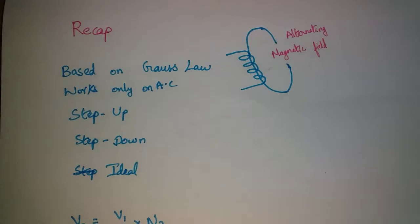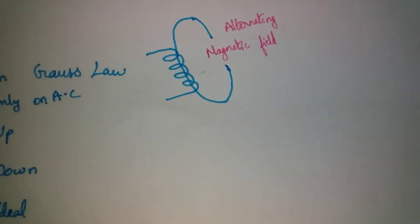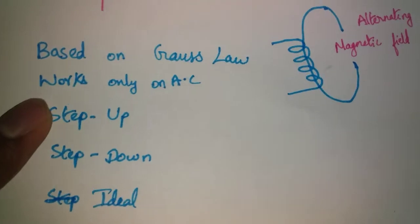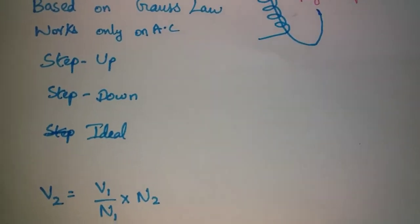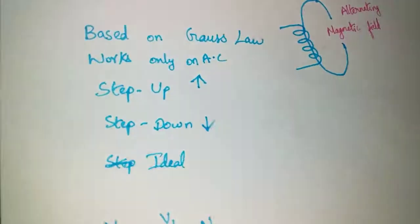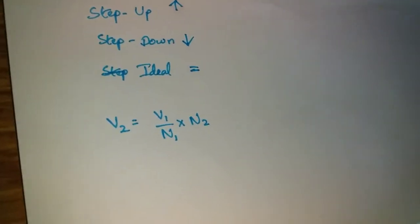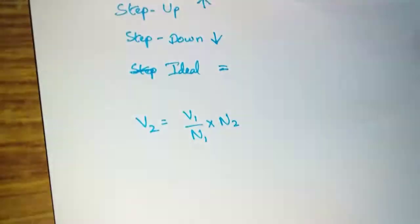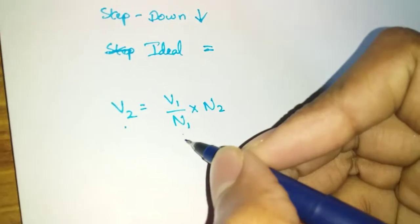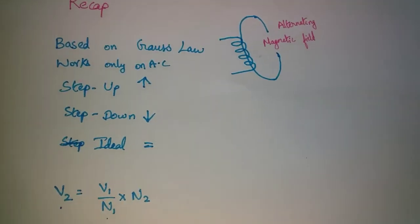Short recap: first, the generator uses a magnetic field to produce alternating current. This transformer works only with AC — not DC. There are step-up and step-down types. In a step-up transformer, the output voltage is higher than the input. In a step-down transformer, the output voltage is lower. An ideal transformer has input voltage equal to output. The formula is: V2 = (V1 / N1) × N2, where V1 is input voltage, N1 is number of windings in the primary coil, and N2 is number of windings in the secondary coil.